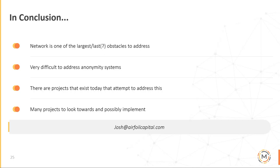In conclusion, network is one of the largest last obstacles to address. It is very difficult to address anonymity systems — there's a reason Tor has been around for almost two decades and even in their documentation they do not address a global passive adversary. Anonymity systems are still very new and on the forefront of understanding these issues. There are projects that exist today that attempt to address this, both good and bad, but there are also many projects to look towards and possibly implement. The Monero community is very adaptive and can make the pieces fit. You can email me at josh@airfoilcapital.com.